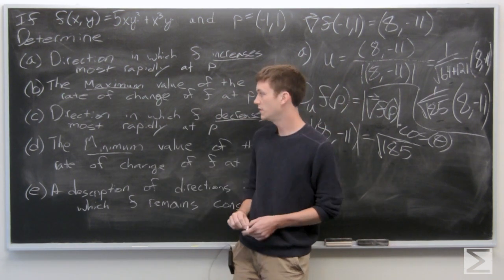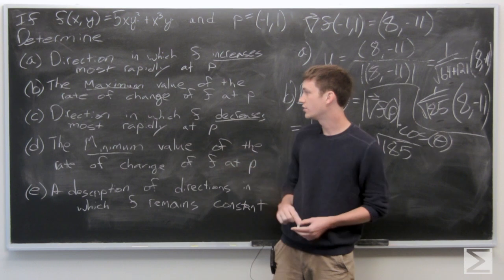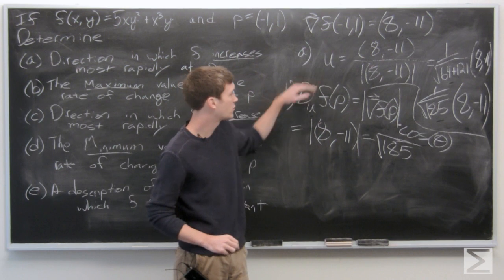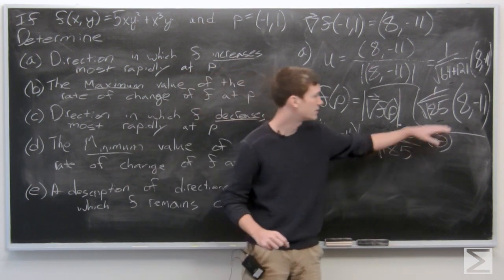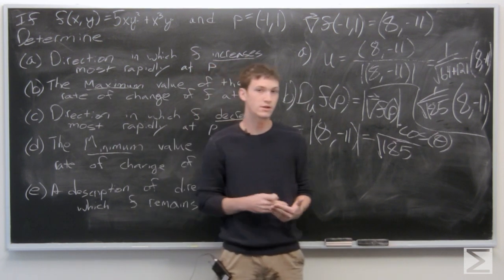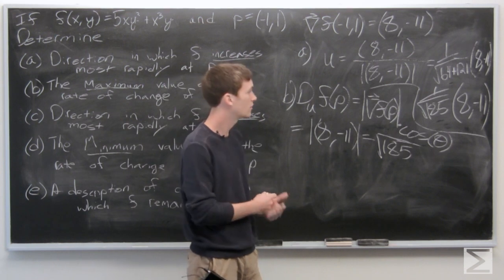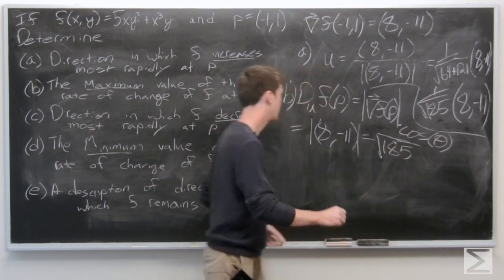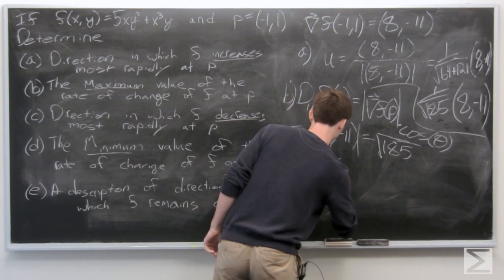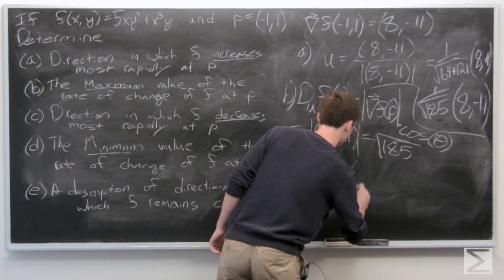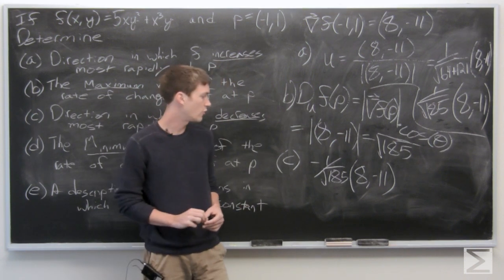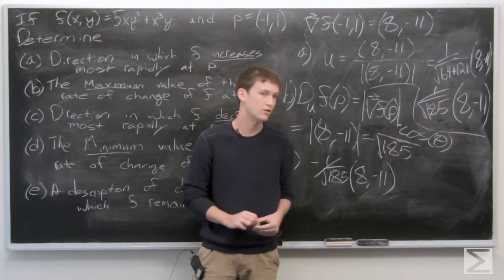For part c, we want to find the direction in which f decreases most rapidly at p. The direction of most rapid decrease is the opposite of the gradient vector direction, so we place a negative sign in front, giving us negative 1 over the square root of 185 times the vector ⟨8, -11⟩.